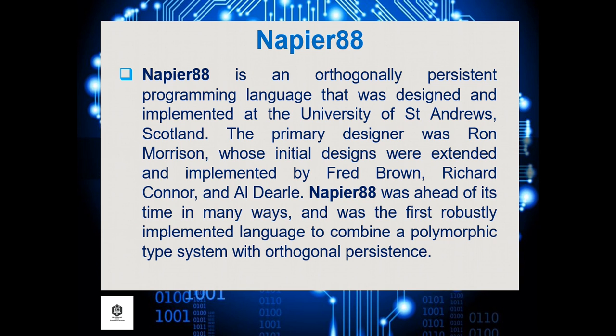Napier 88 is an orthogonally persistent programming language that was designed and implemented at the University of St. Andrews. The primary designer was Ron Morrison, whose initial designs were extended and implemented by Fred Brown, Richard Connor, and Ile Dyerly. Napier 88 was ahead of its time in many ways and was the first robustly implemented language to combine a polymorphic type system with orthogonal persistence.